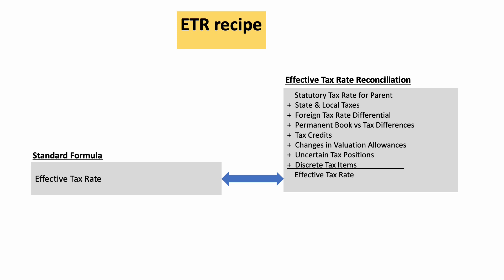The next item that can affect your effective tax rate is the valuation allowance. A valuation allowance is essentially a bad debt reserve against your deferred tax asset, which can drive your tax expense upwards and cause a higher effective tax rate. We will discuss valuation allowance in more detail in a different presentation.